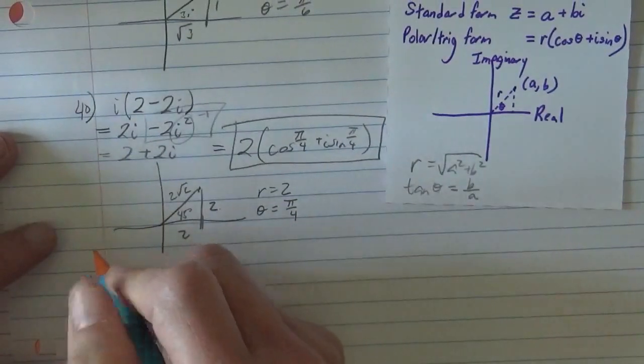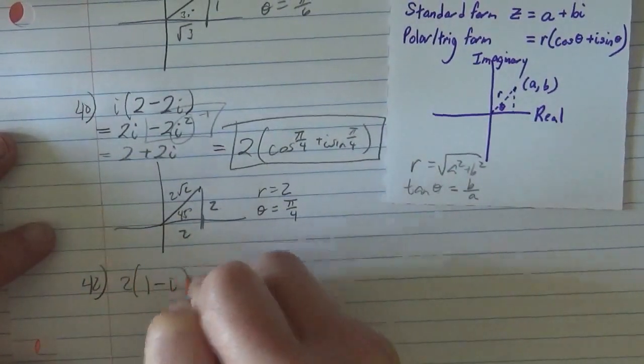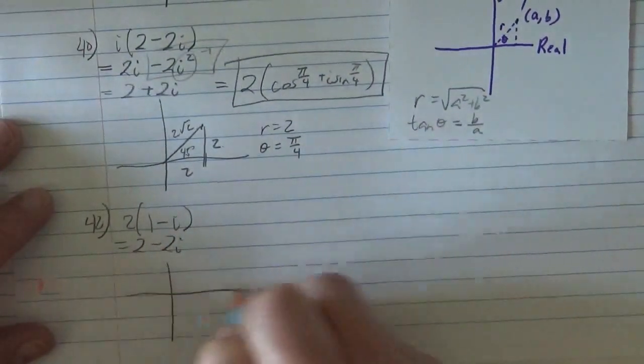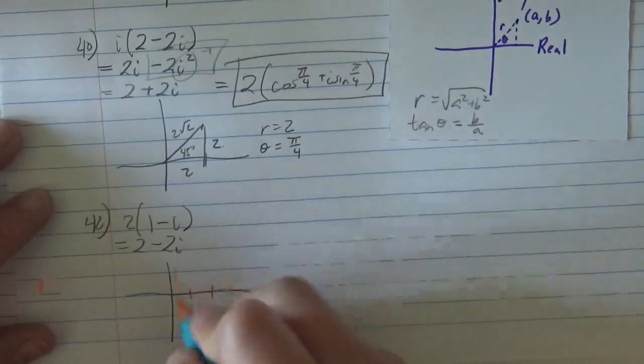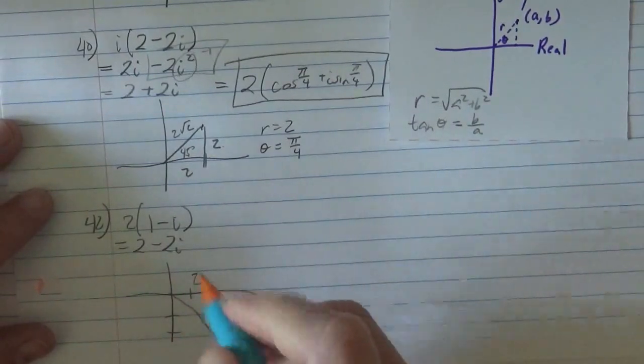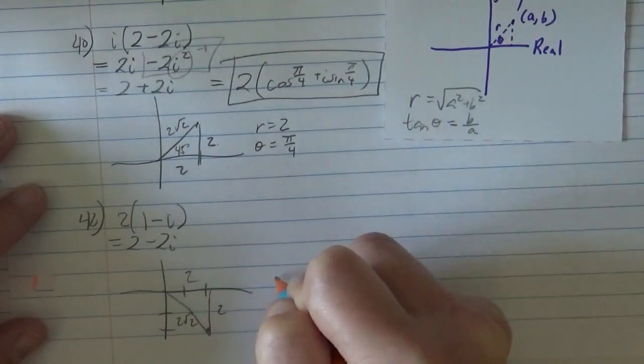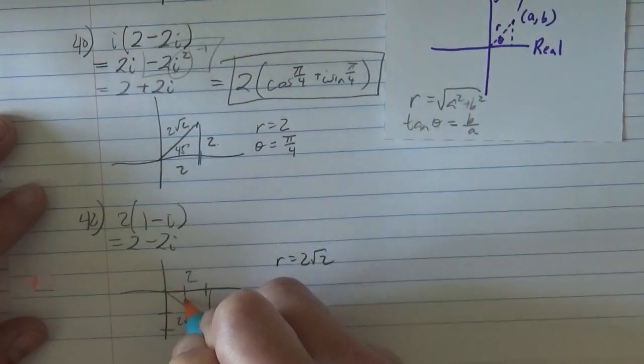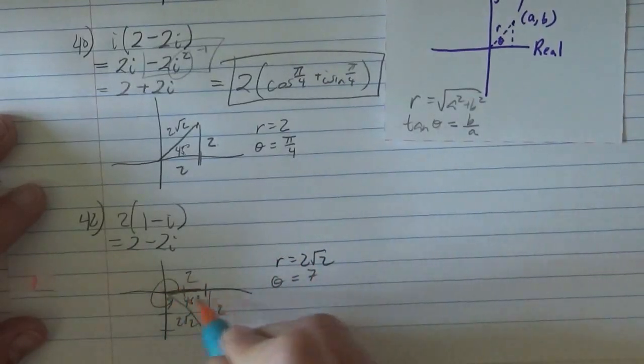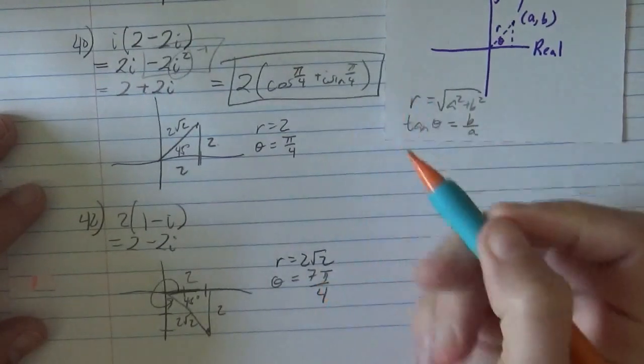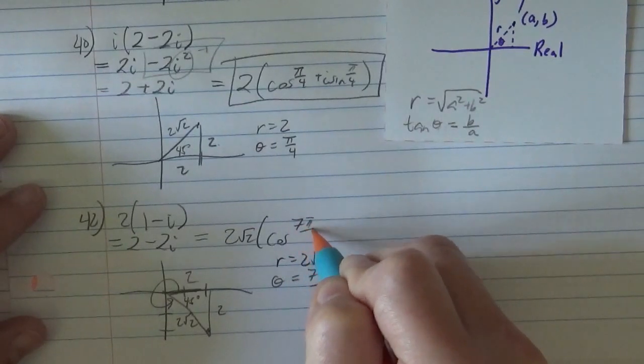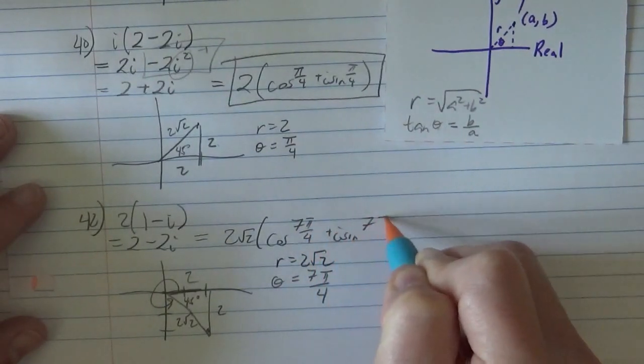Excellent. Let me do it again. 2 times 1 minus i. So this is just 2 minus 2i. And we graph. So 2 on the real, negative 2 on the imaginary, down there somewhere. And again, they have this 2, 2, 2 root 2. So your radius should be 2 root 2. It's a 45 degree angle, so the equivalent of that in radians all the way around from the x-axis, that's 7 pi fourths. So this is 2 root 2 cosine 7 pi fourths plus i sine 7 pi fourths.